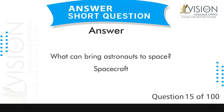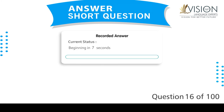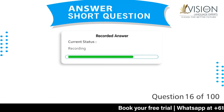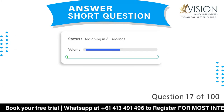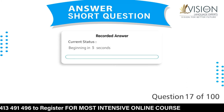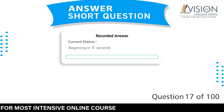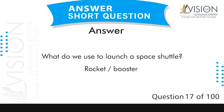What can bring astronauts to space? Spacecraft. What is the opposite direction of sunrise? West. What do we use to launch a space shuttle? Rocket or booster.